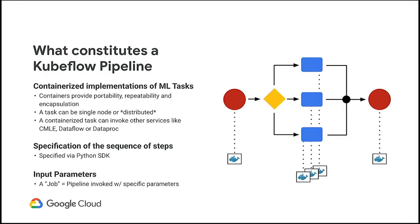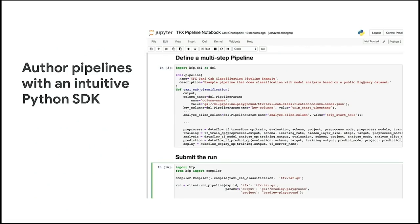How to connect the outputs of one step with the inputs of downstream steps. The third aspect of defining a pipeline is defining the set of input parameters that the end user has to provide. The containerized steps, the definition of the workflow topology, and the specification of the input parameters together constitute a Kubeflow pipeline.